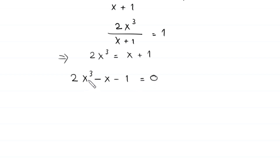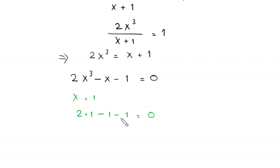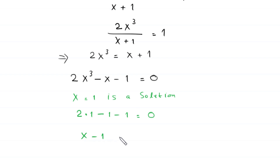This is a cubic equation. If we check x = 1 in this equation, this becomes 2(1) - 1 - 1 = 0, which is 2 - 1 - 1 = 0. So x = 1 is a solution of this cubic equation.